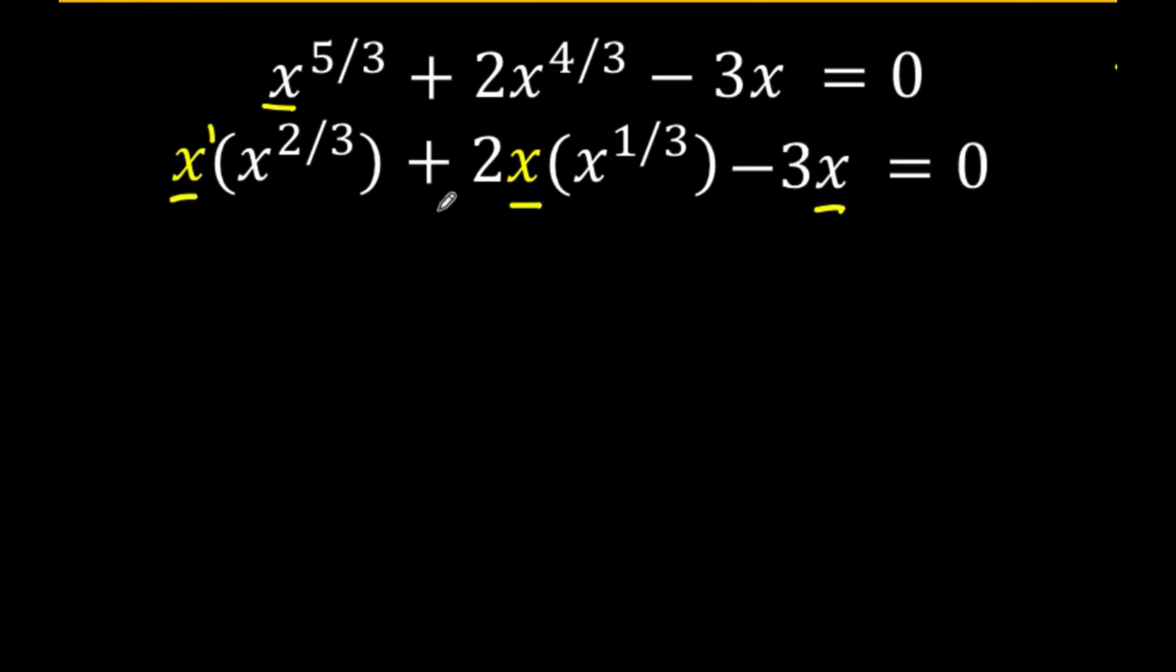Notice now that x is common among the three terms. So factoring out this common factor x, we have x times the expression: x times x raised to 2 thirds divided by x gives us x raised to 2 thirds, then 2x times x raised to 1 third divided by x gives us 2 times x raised to 1 third, and negative 3x divided by x gives us negative 3, equals 0.